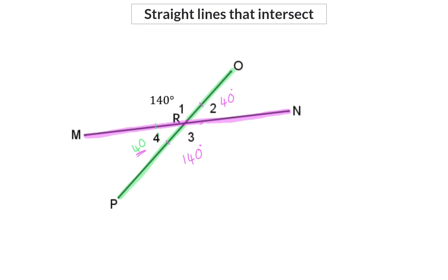Note that the angles opposite each other are equal. R1 and R3 are both 140 degrees, and R4 and R2 are both 40 degrees. This will always be true when two straight lines intersect. When using this property in calculations, you need to supply a reason, and that will be vertically opposite angles.